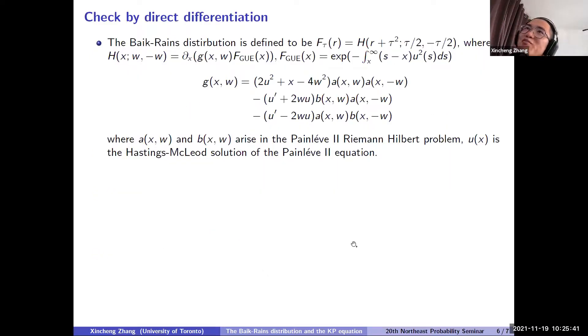So this is how we're going to prove this. We can prove this by directly checking the differentiation. So the Baik-Rains distribution is defined to be F_τR. So F_τR is the definition up here in the first slide. It is equal to some function H, and the function H is just the derivative in X of function G and function F. So here you see, this derivative in X is basically the derivative in R when you, after you plug in R into the variable X and W. Okay. So here the function G is defined to be a function of variable U,X,W,A,B. So there are like five variables here. So here function A(X,W) and B(X,W) are functions arising